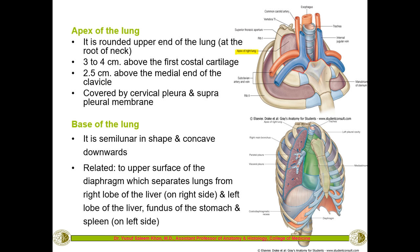Relations of the base are important clinically — for example, during pleural effusion procedures, you need to know which structures can be damaged. On the right side, below the dome of the diaphragm, is the right lobe of the liver. On the left side, below the base of the left lung, there is the fundus of the stomach and the spleen, which is in direct contact with the chest wall.